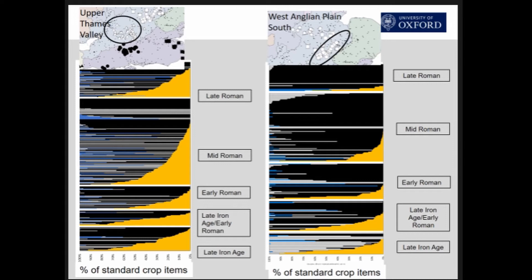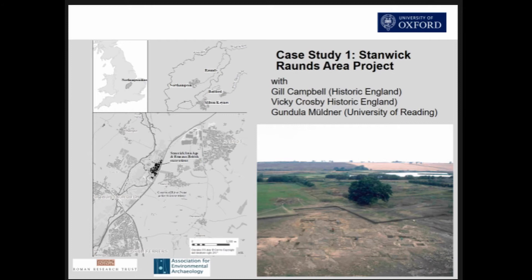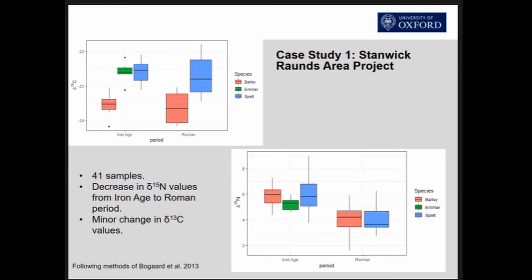To address this, I've recently undertaken some stable isotope analysis. The first case study is a site called Stanic, which is a long-term site of occupation from the Iron Age through to the late Roman period. It's in the east midlands, on an area of gravel and clays. It was a long-term detailed excavation in the 1980s, producing abundant archaeological material. This was an initial pilot study with 41 samples.